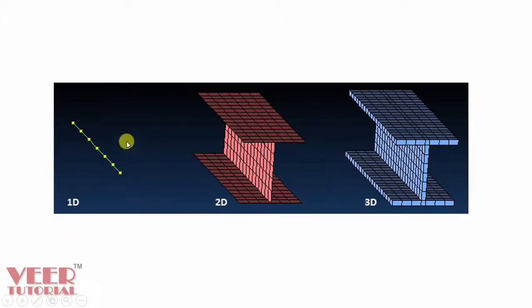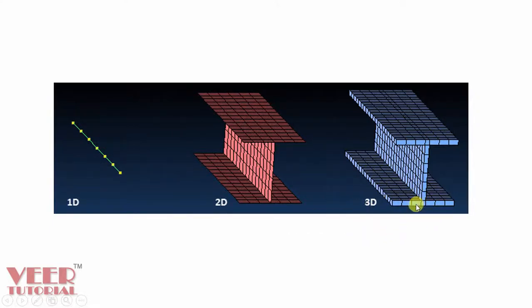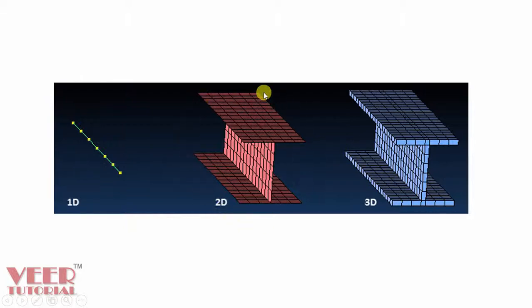In 1D meshing, we have bar elements. In 2D meshing, we don't have any thickness, as we can see. In 3D meshing, we have thickness, so it creates a volume. When we create a 3D mesh, it creates a lot of elements. When the thickness is very less, we can extract the middle surface and generate a 2D mesh instead.